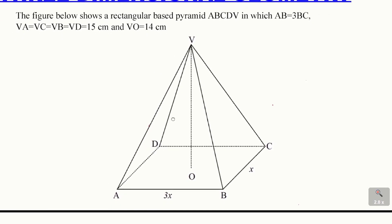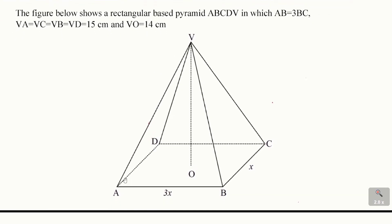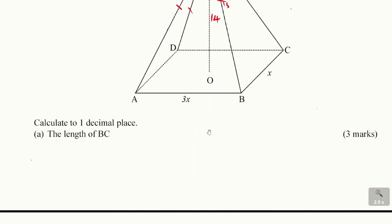Let's go straight to the first part. As you can see in the diagram, AB equals 3BC. So BC is X and AB is 3 times BC, that is 3X. The perpendicular height is 14, and VC equals VA equals VB, so all the slant edges are 15. With that information, it is possible to calculate the length of BC.